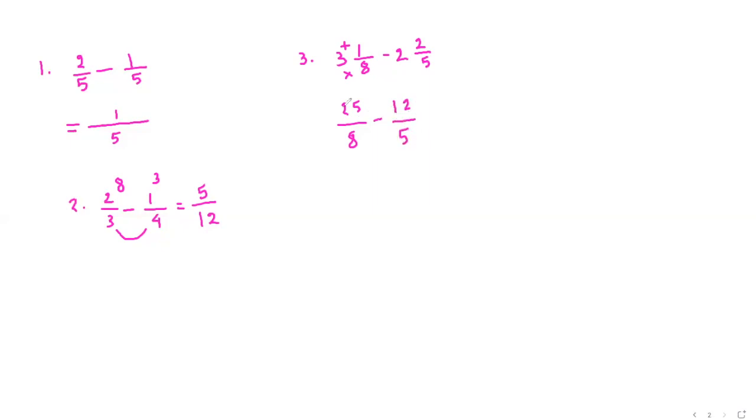Now you can use a calculator to do the multiplication across. So 5 times 25 is 125. 8 times 12 is 96. Now we have to subtract. 125 minus 96. And below, we have to multiply 8 times 5. So 125 minus 96 is 29 over 8 times 5 is 40.